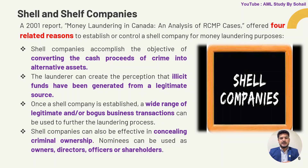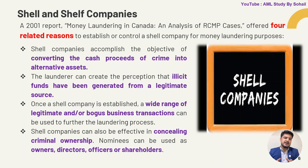Once a shell company is established, a wide range of legitimate-looking business transactions can be used to further the laundering process. For example, the company can issue fake invoices, fake expenses, fake payments, and even show employees working there with salary expenses and petty cash. In this way there is a wide range of transactions that can be shown, and in the end the person will be successful in making these transactions appear to come from a legitimate source.